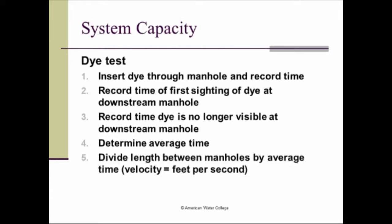And that's what's used for the calculation. So in step five, you divide the length between the manholes, which could be 300 feet, could be 500 feet. And you'll divide it by the average time in seconds. And that will give you your feet per second or the velocity in feet per second.